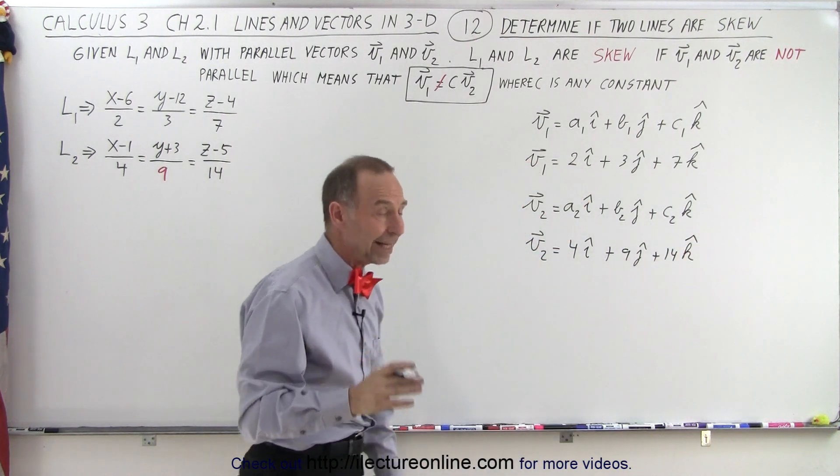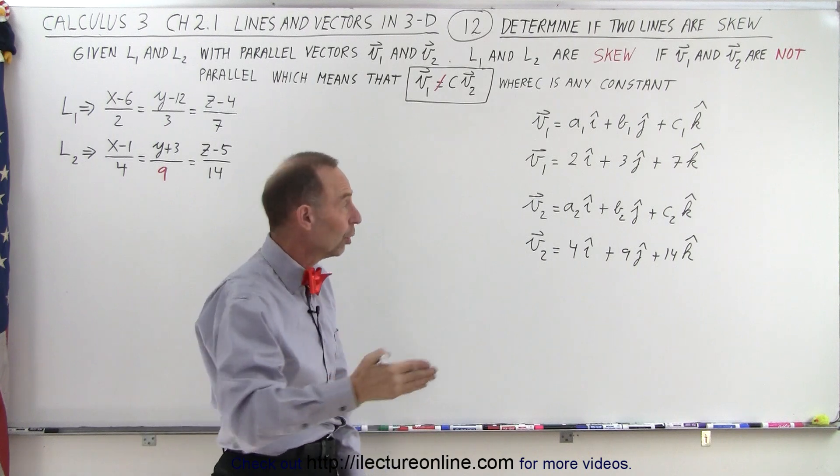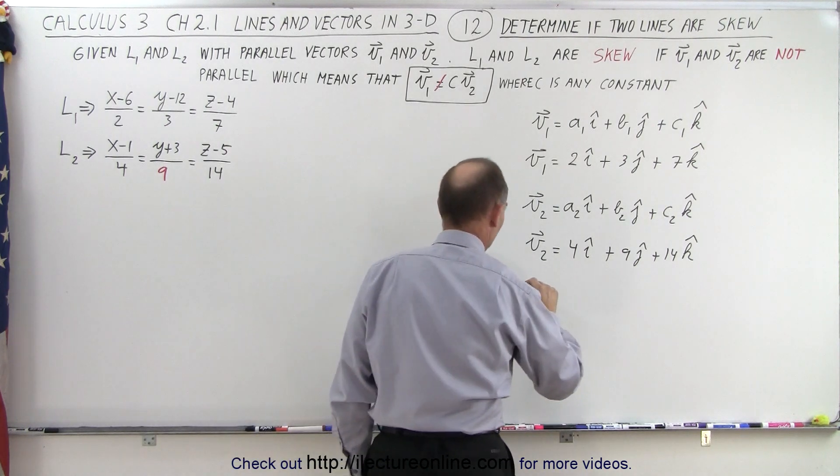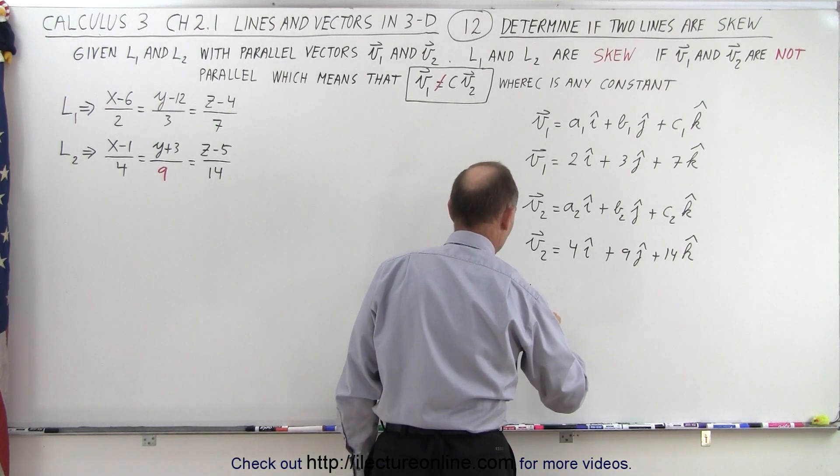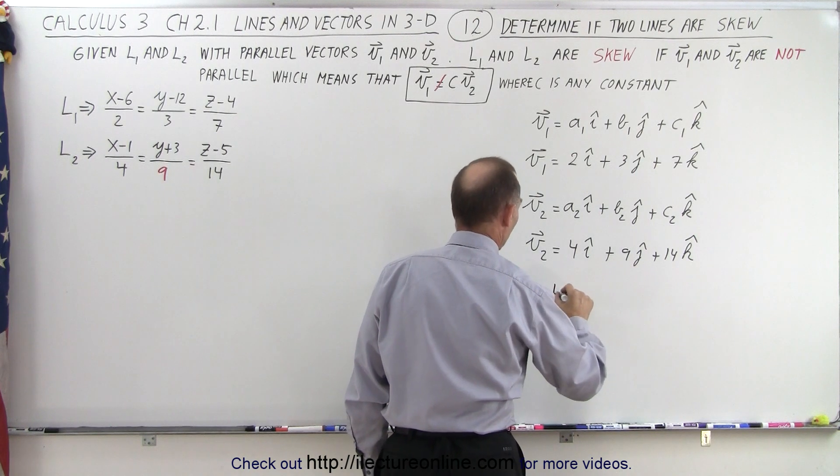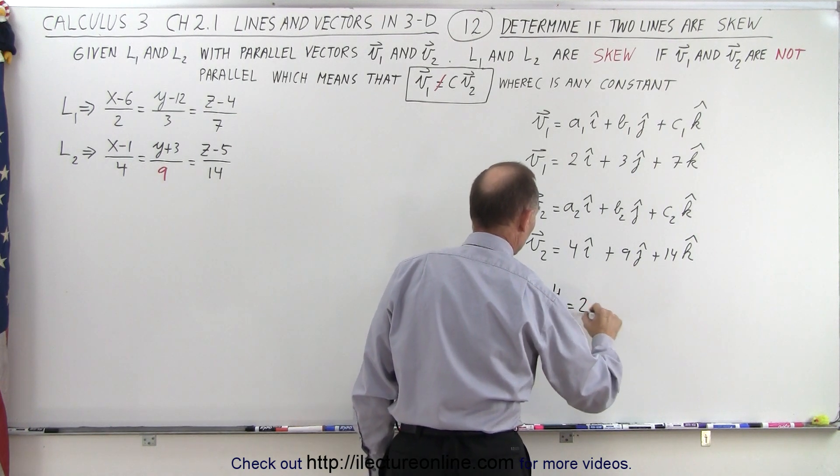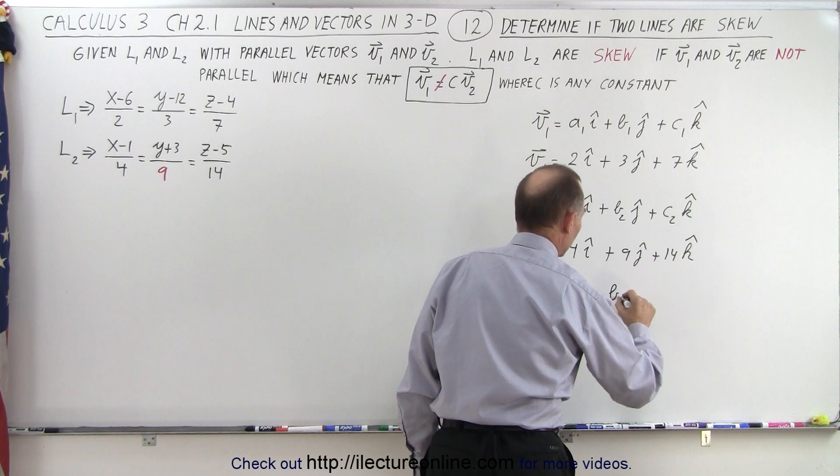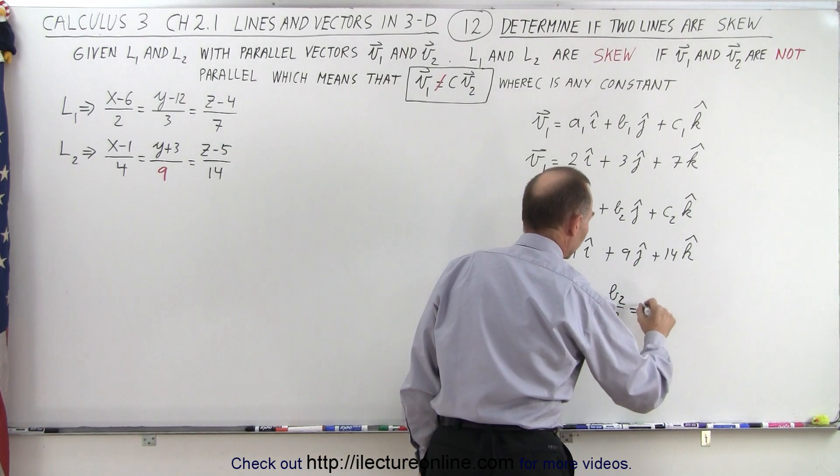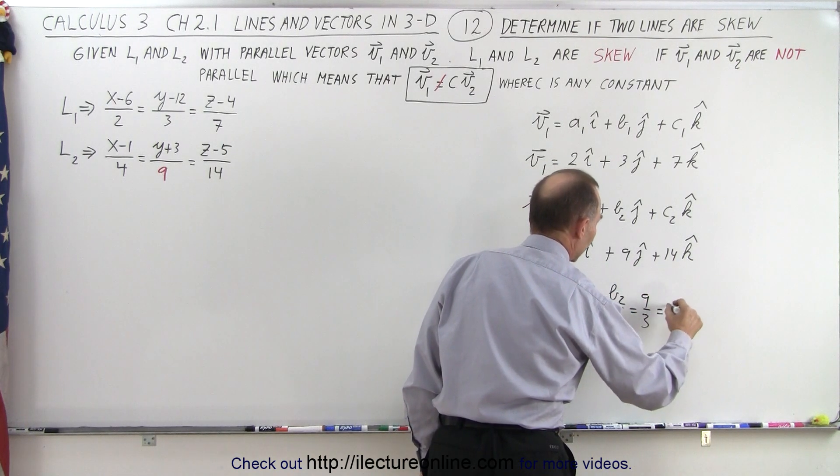Now let's calculate the ratios of the components of vector 2 to the components of vector 1. So A2 divided by A1 is equal to 4 divided by 2, which is equal to 2. Now B2 divided by B1 is equal to 9 divided by 3, which is equal to 3.